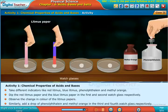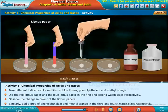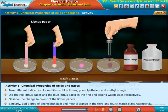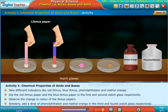Similarly, add a drop of phenolphthalein and methyl orange in the third and fourth watch glass respectively. Note down the observations in a table. Repeat the same procedure for remaining substances.